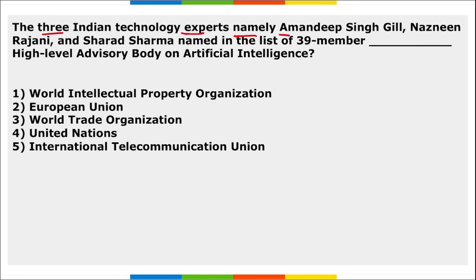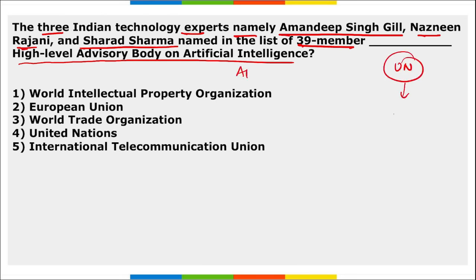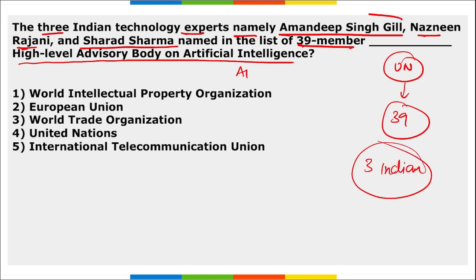Three Indian technology experts — Amandeep Singil, Nazneen Rajani, and Sharad Sharma — were named in the list of 39 members of the UN High-Level Advisory Board on Artificial Intelligence. This board was set up by the United Nations and will support the international community's efforts to govern AI and frame guidelines on the benefits, negatives, and dangers of artificial intelligence.